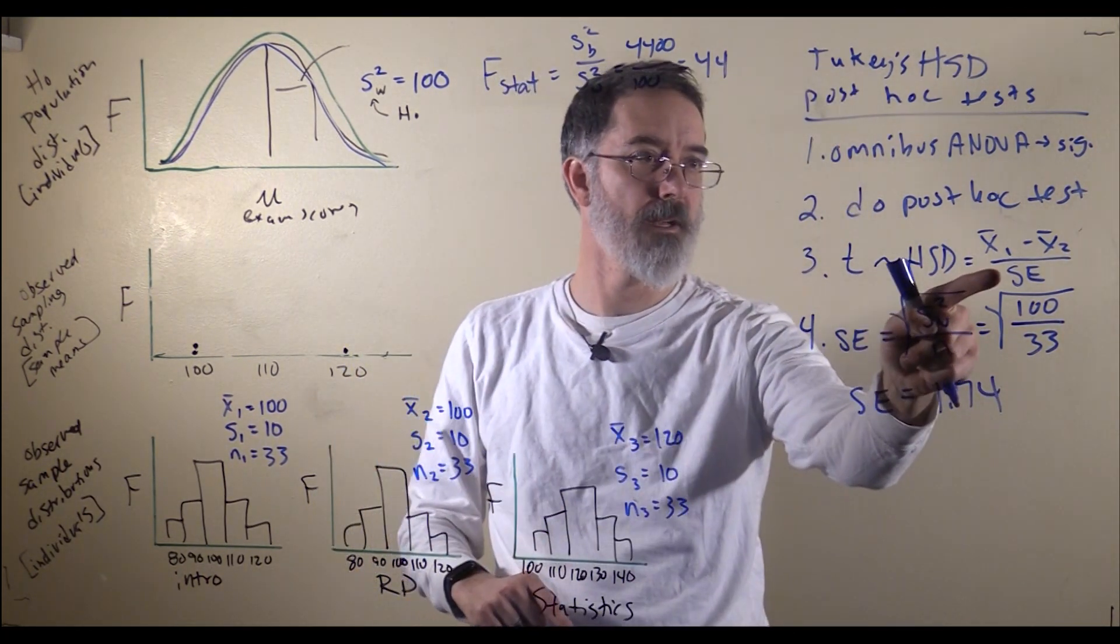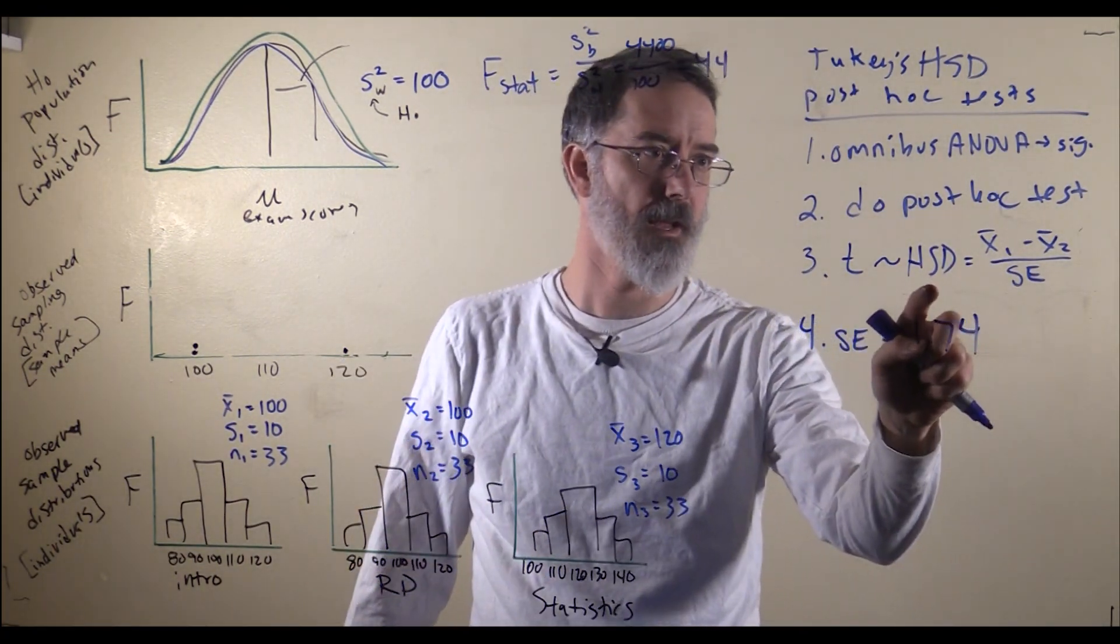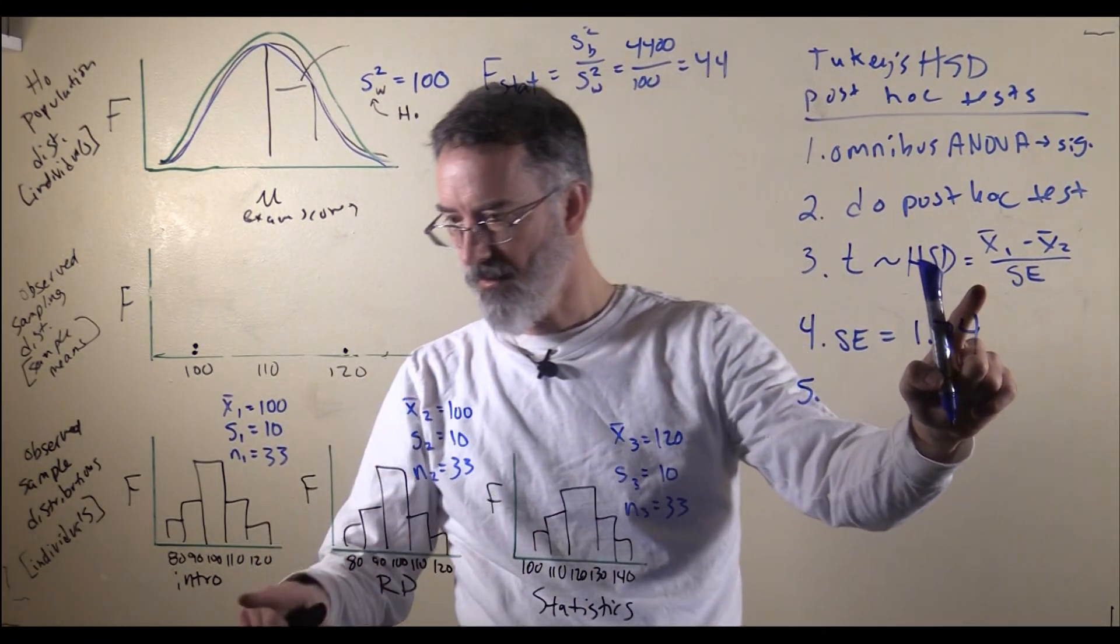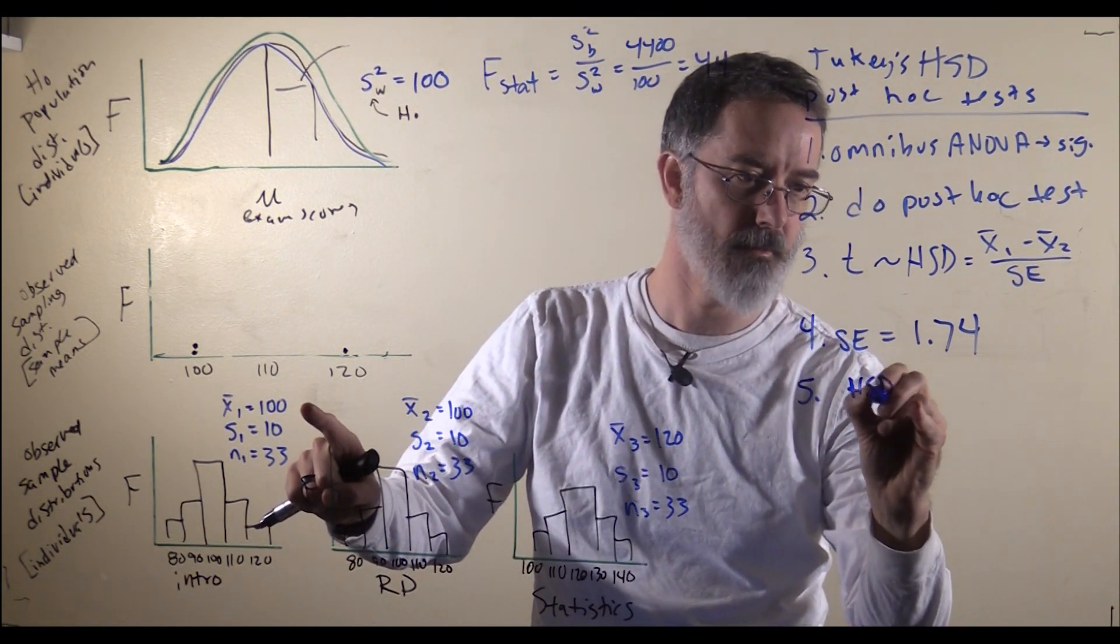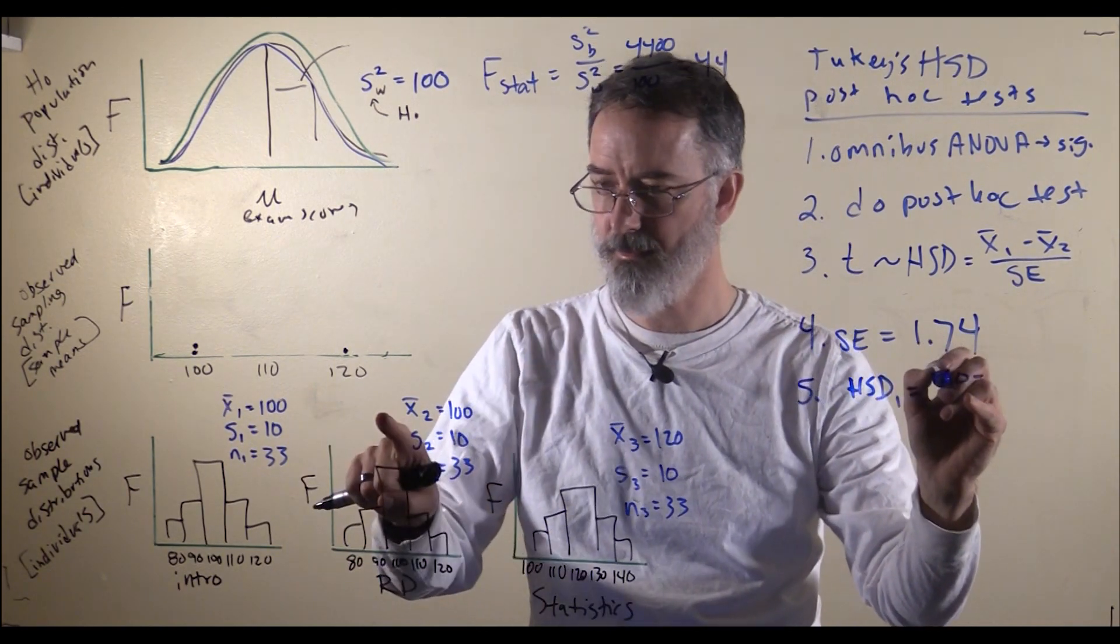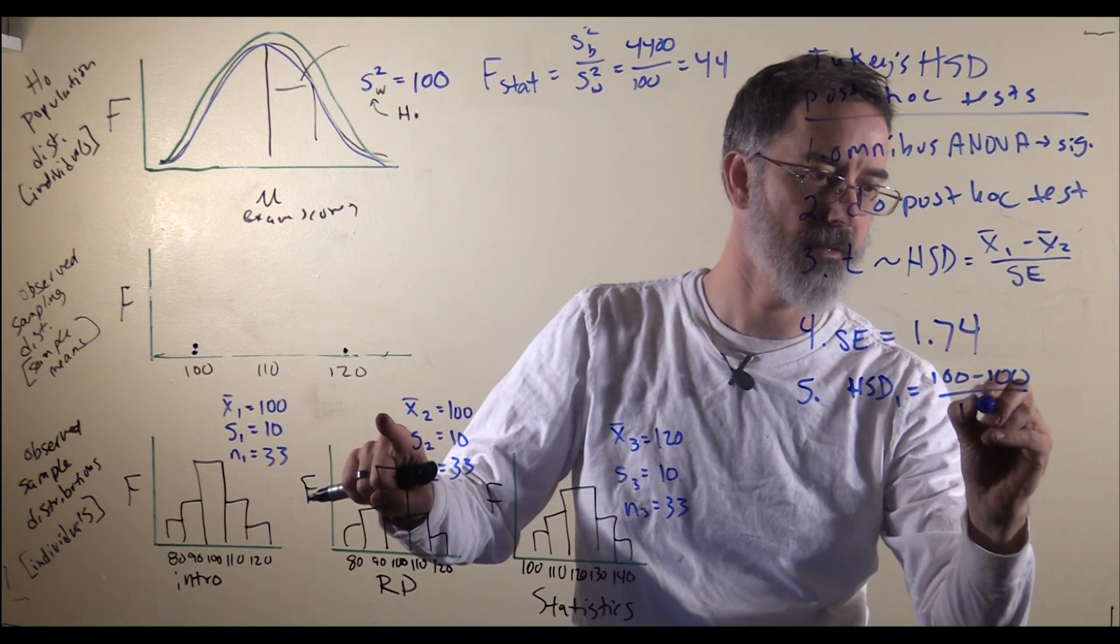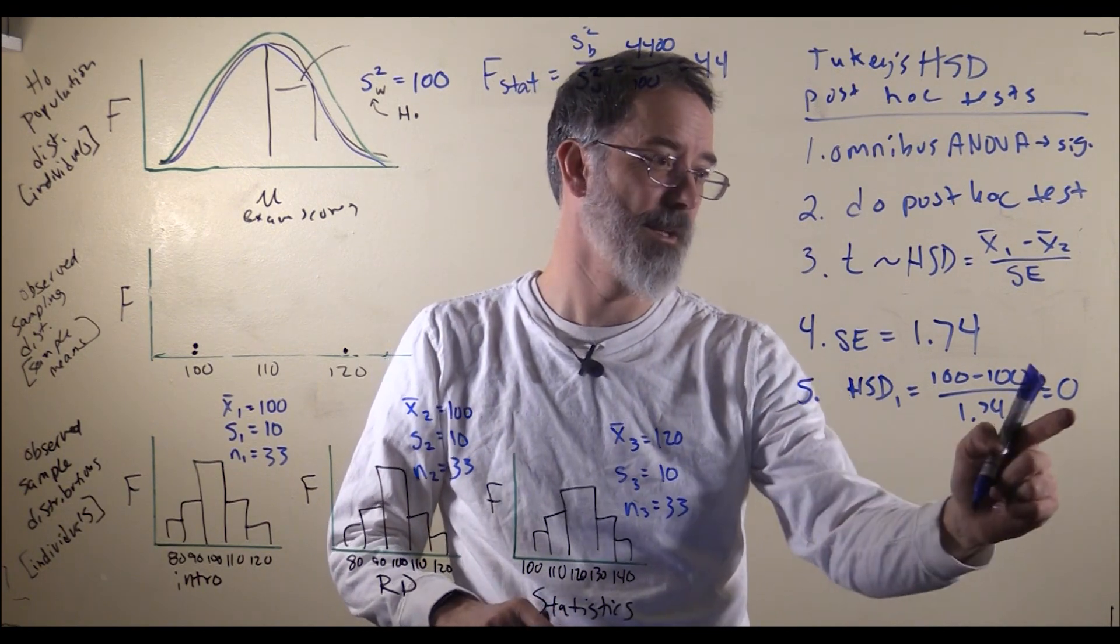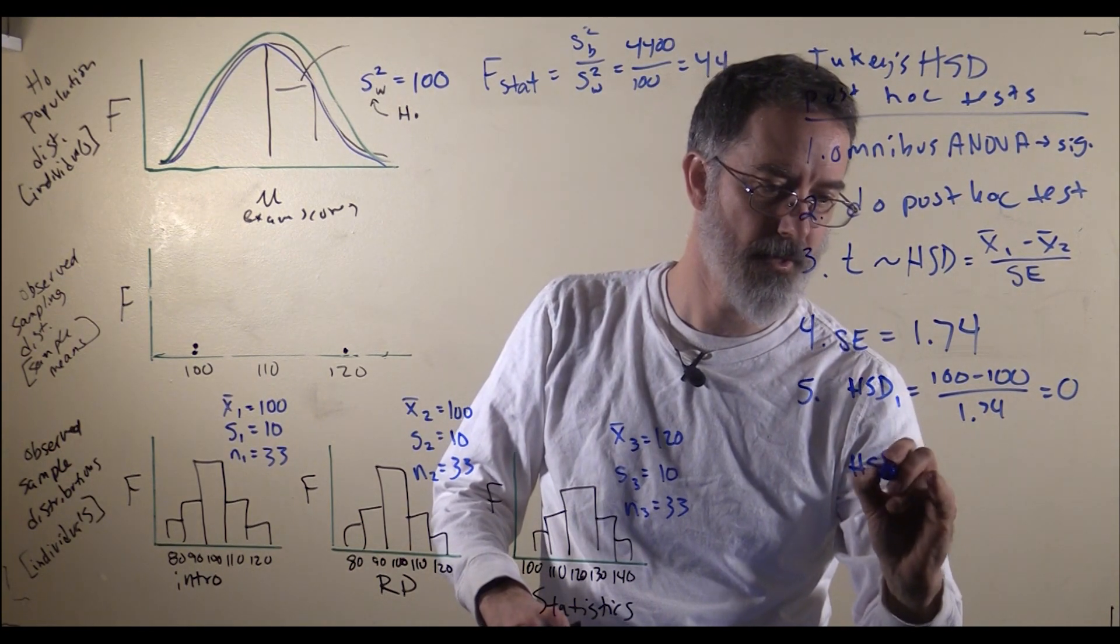Now we have got the denominator that we will use for all of our pairwise comparisons. Next, we will calculate all of our different HSD values, our things that are like T values. We need mean 1, we will call that intro, 100. HSD1 equals 100 minus research design, 100, divided by 1.74, and that will give us a 0. We already know since this is similar to a T, this is not going to end up being significantly different.